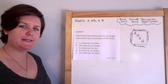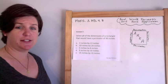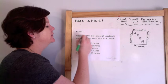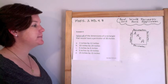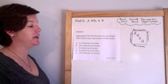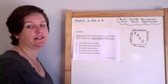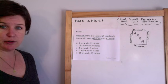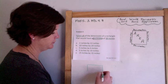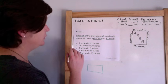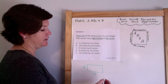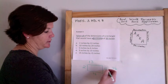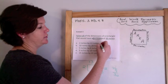Alright, this is our last example for today, Example 4, and it is a multi-select. How do I know? Because the very first two words give it away: 'Select all.' Select all of the dimensions of a rectangle that would have a perimeter of 30 inches. So here's my rectangle — I need a perimeter of 30 inches. If we had 2 inches by 13: 13 plus 13 is 26, 2 plus 2 is 4, and that equals 30. So this is a correct answer, but I'm not finished.